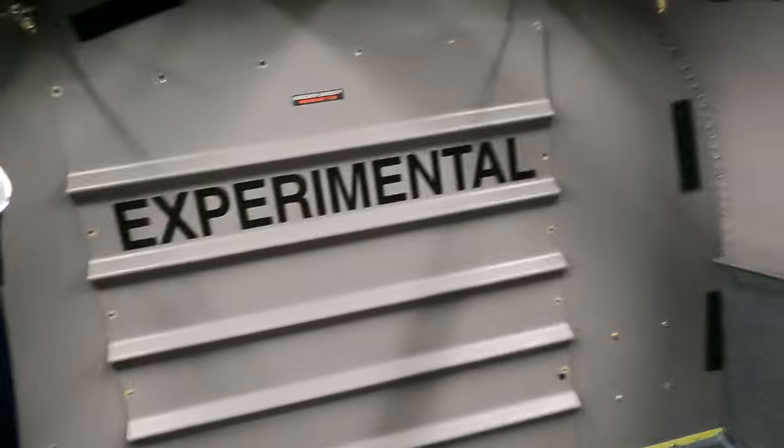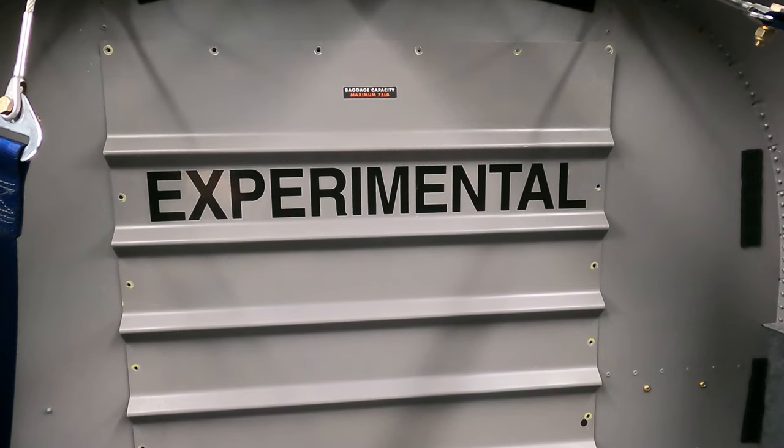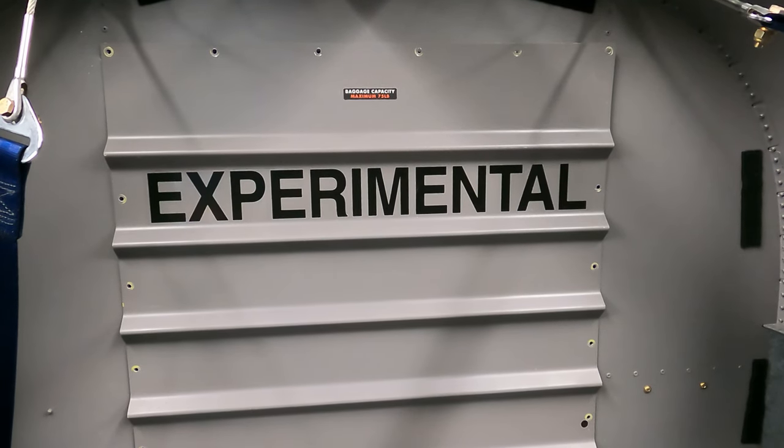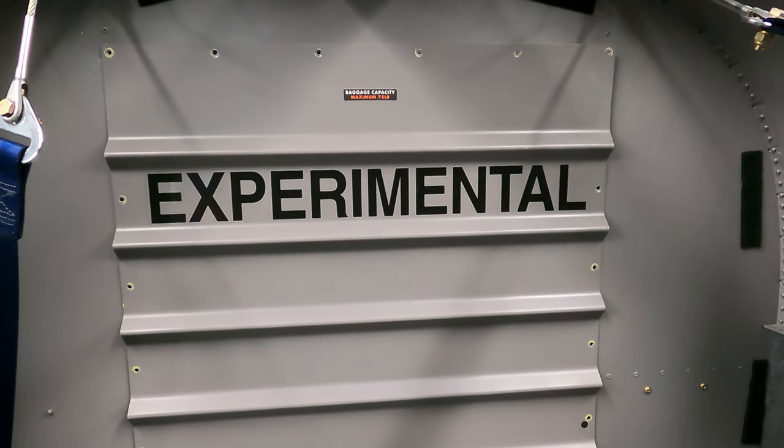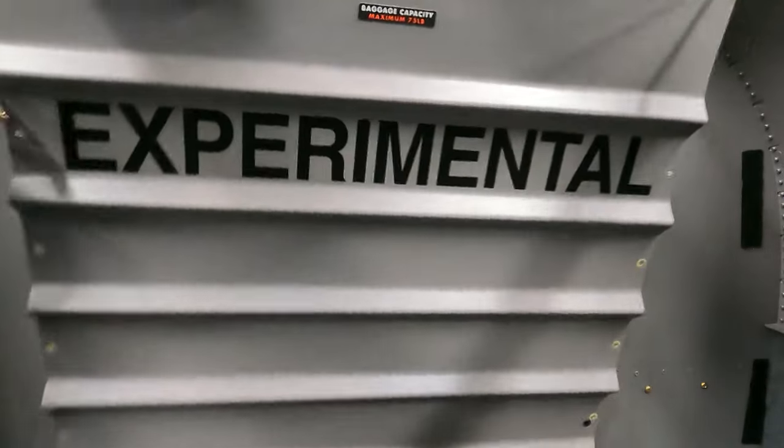I've already gone ahead with a screw gun and removed all of those screws that you see there. This is the only time you want to use a screw gun. Once we get in the tail cone here, there's going to be fuel gushing out everywhere. You don't want any sparks back there. So once you're done with the screw gun here, put it away.